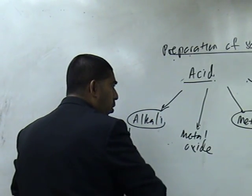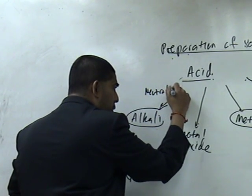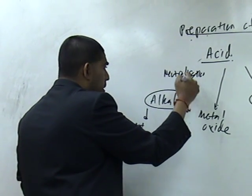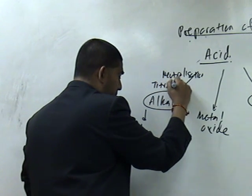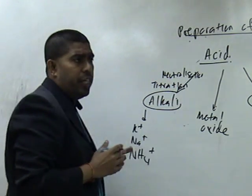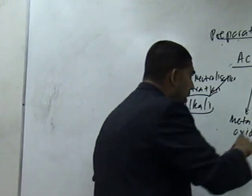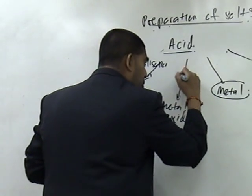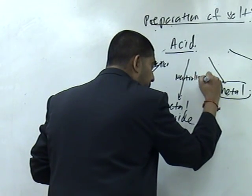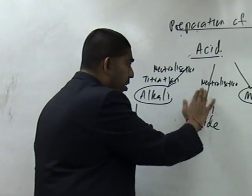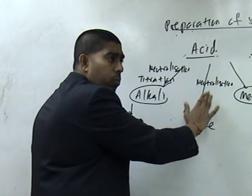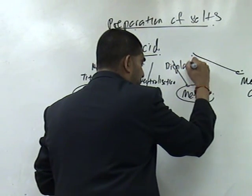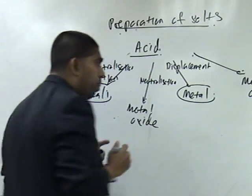This process is called neutralization. Acid plus Alkali is called neutralization. And the method is called titration. Are you clear, students? This here, acid plus with metal oxide, is also called neutralization. The process is called neutralization. There is no name for method. This, acid plus with metal, is called displacement reaction.